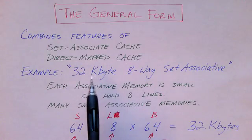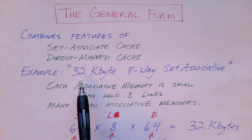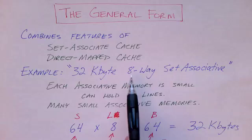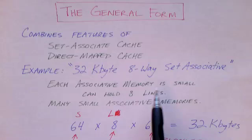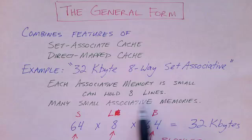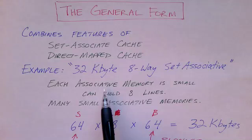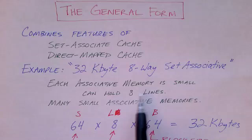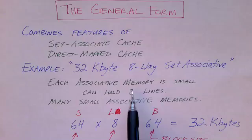To illustrate this design we're going to look at a specific example, a 32 kilobyte cache. It's eight-way set associative. The idea is that we have many small associative memories, and each one of these associative memories is quite small. In this example, because it's eight-way, each one has only eight lines.